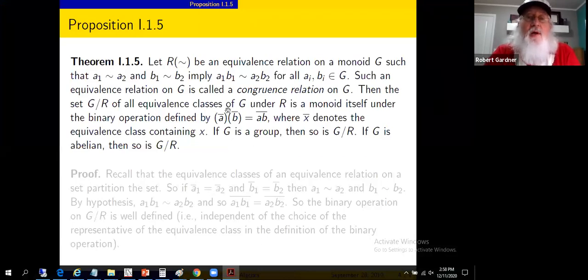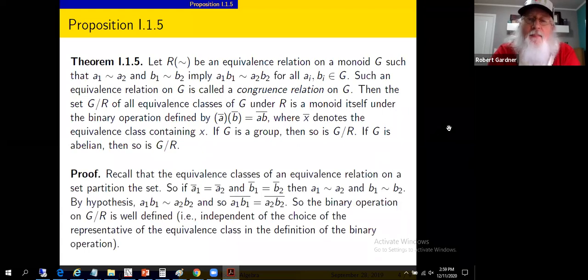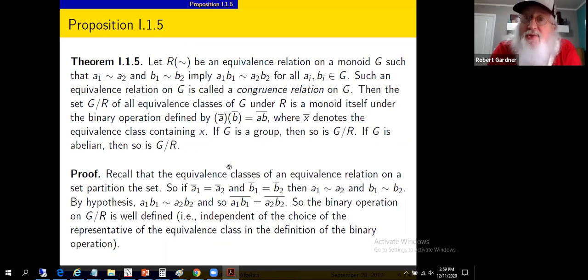We'll take equivalence relations and show that equivalence classes form first a monoid, then a group, and an abelian group with additional hypotheses. One of the main reasons we look at equivalence classes is that equivalence classes partition a set on which the equivalence relation is defined — they're pairwise disjoint and partition the set, in this case monoid G.